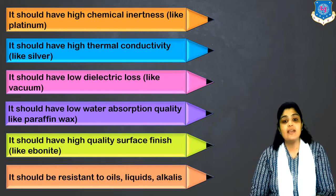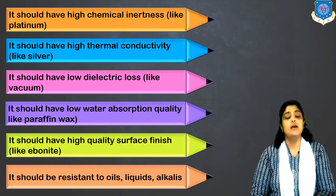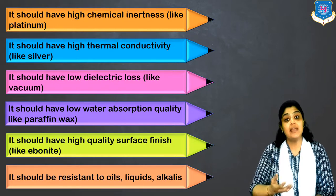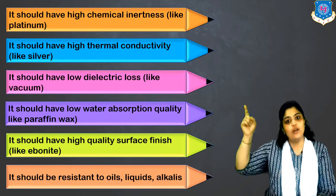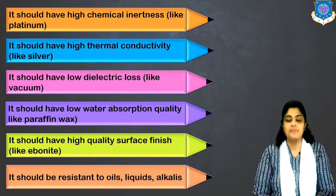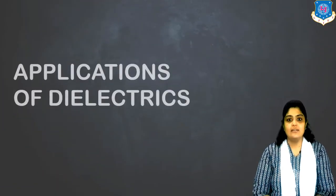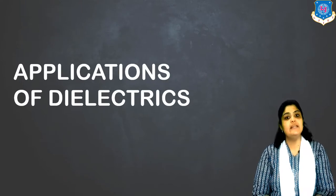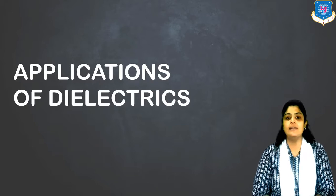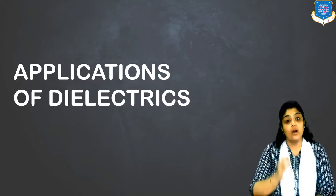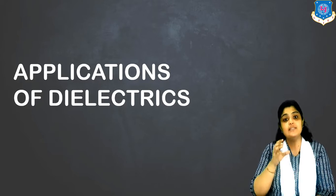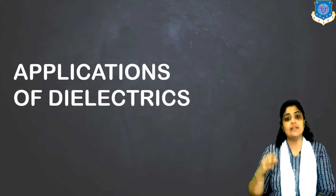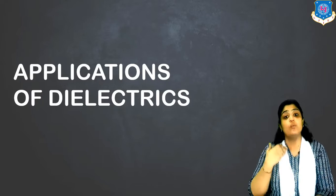Lastly, it should have good resistance to oils, liquids, and alkalies — meaning it should not react, oxidize, or corrode in contact with these materials. These are the properties to keep in mind when selecting a good dielectric material. The application is also important — which application you are using the dielectric for should be kept in mind along with these listed properties. Now let us discuss the applications of dielectric materials: capacitors and transformers.